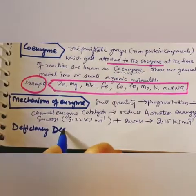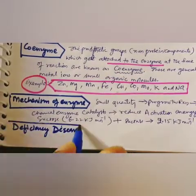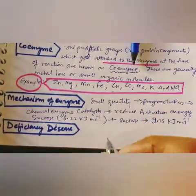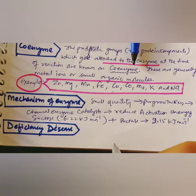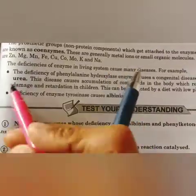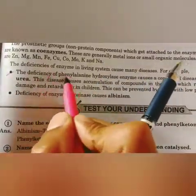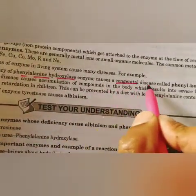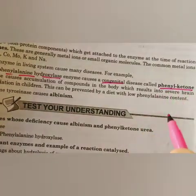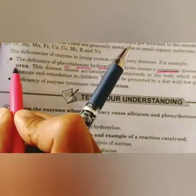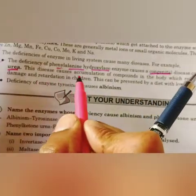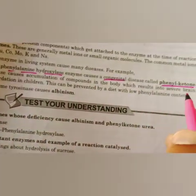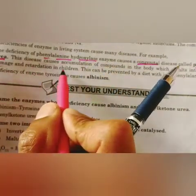There are also deficiency diseases caused by lack of specific enzymes in the body. Deficiency of the enzyme phenylalanine hydroxylase causes a congenital disease called phenylketonuria. This disease causes accumulation of compounds in the body, resulting in severe brain damage and retardation in children.